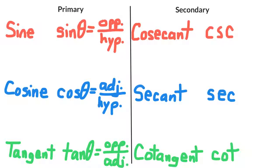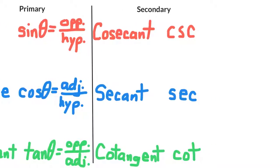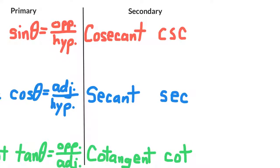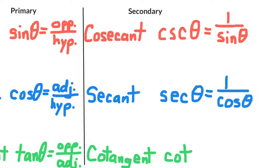You may recall from the beginning of the video that I said the secondary trig ratios are also called reciprocal trig ratios. This is because the cosecant is the reciprocal of sine, and the cotangent is the reciprocal of the tangent.